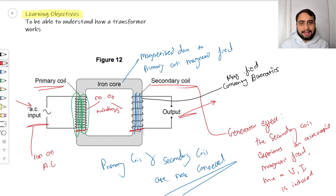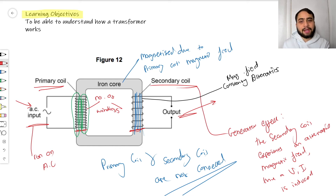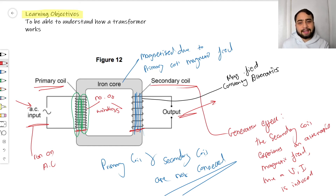Let's work through the full logic from the top. AC input enters the primary coil; the alternating current causes a changing magnetic field around the primary coil. This changing magnetic field magnetizes the iron core with another changing magnetic field. That changing field surrounds the secondary coil, which experiences a change in magnetic flux. This change in magnetic flux causes an induced voltage and current — and that's how transformers work.